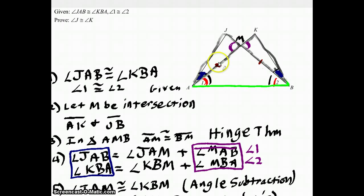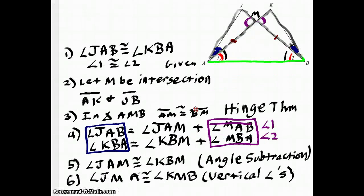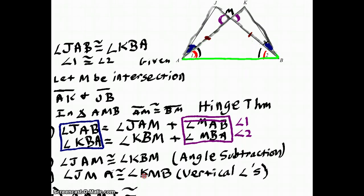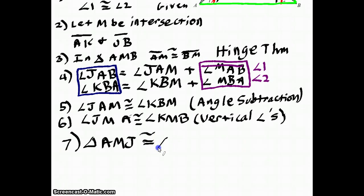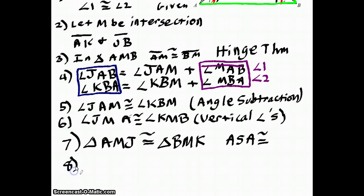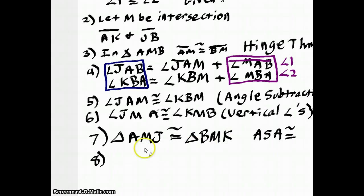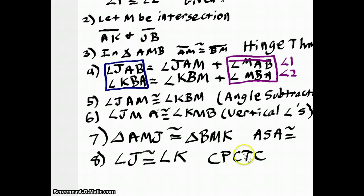Looking at these triangles, I see an angle, a side, and an angle, where the side is between the two angles. So the two triangles must be congruent. Triangle AMJ is congruent to triangle BMK by Angle-Side-Angle congruency. Then, coming back to what we were trying to prove — angle J congruent to angle K — since J and K are in the same corresponding positions, angle J is congruent to angle K by CPCTC, which stands for Corresponding Parts of Congruent Triangles Are Congruent.